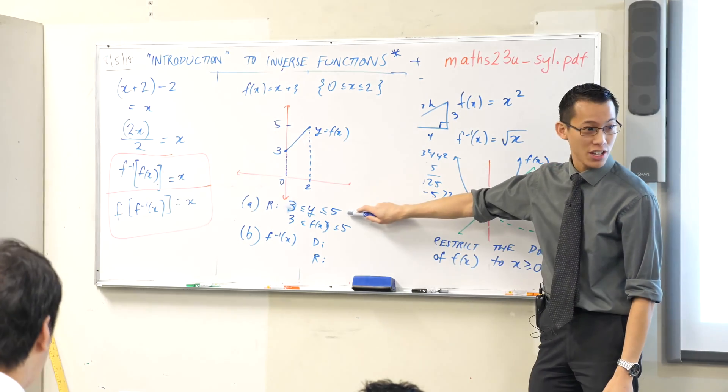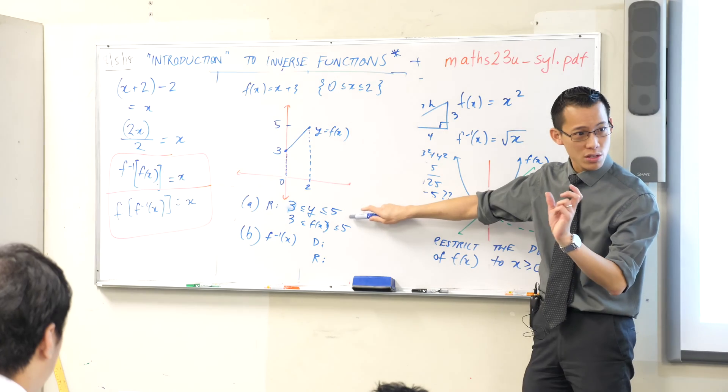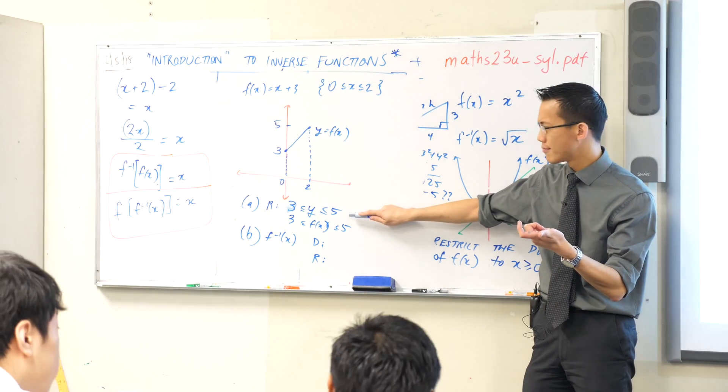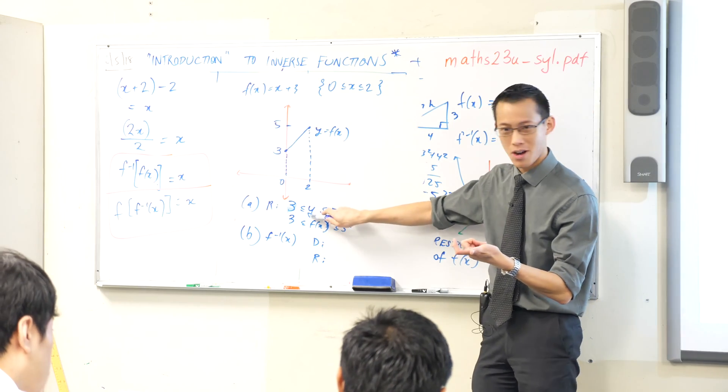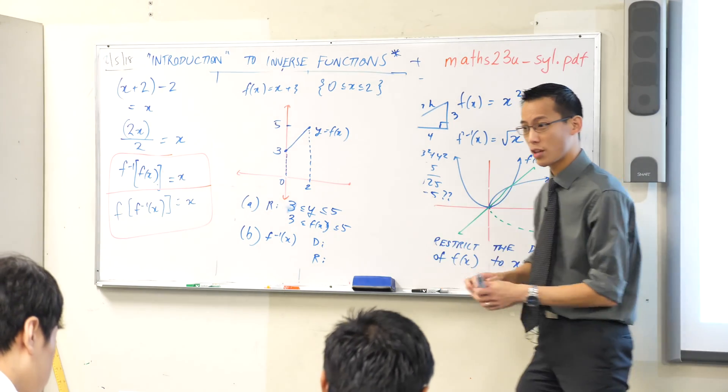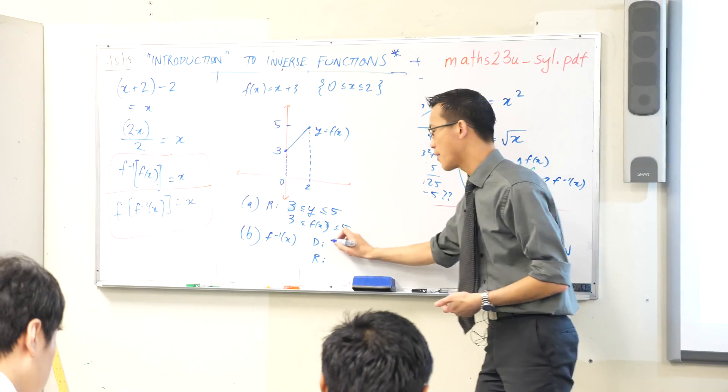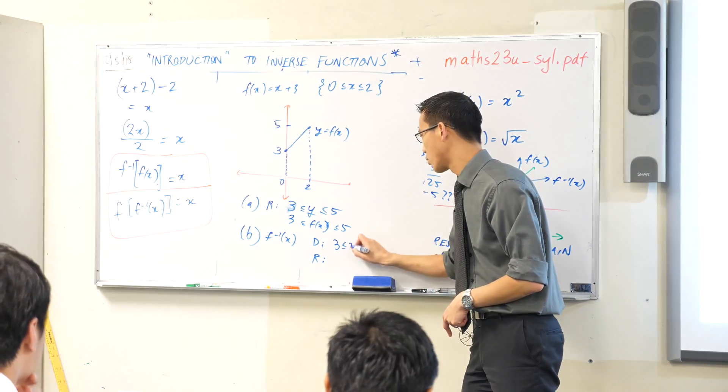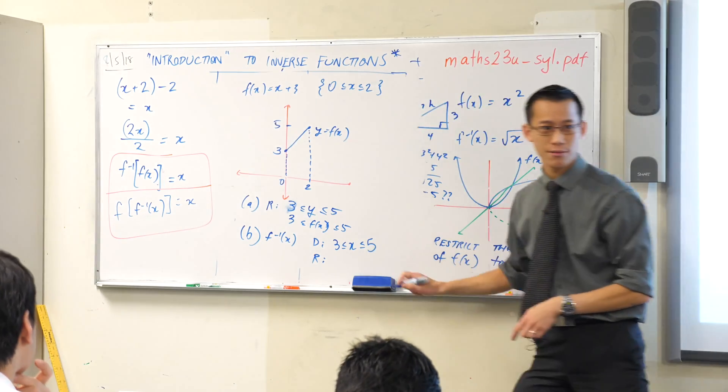So therefore, see this range here, which has y's in it? When you do the switch, what will it become? When you switch around this y and you put an x in there, it's not talking about range anymore, is it? It's talking about domain. So therefore, I can say the domain of the inverse is 3 is less than or equal to x is less than or equal to 5.